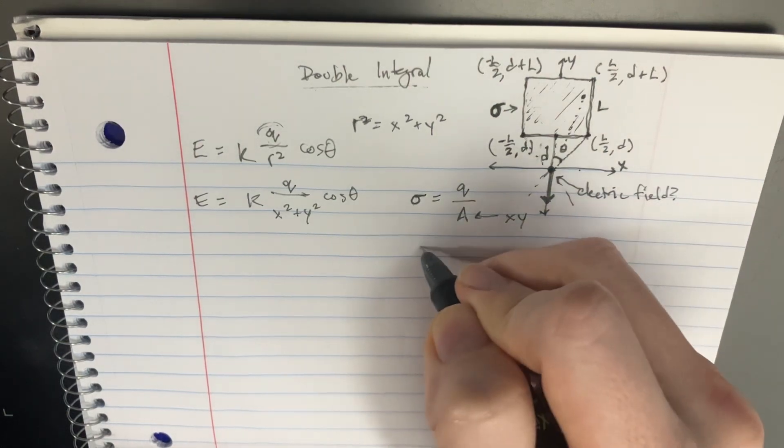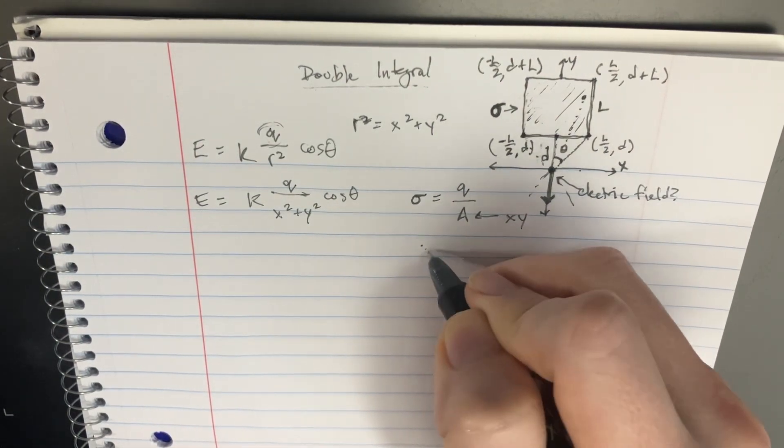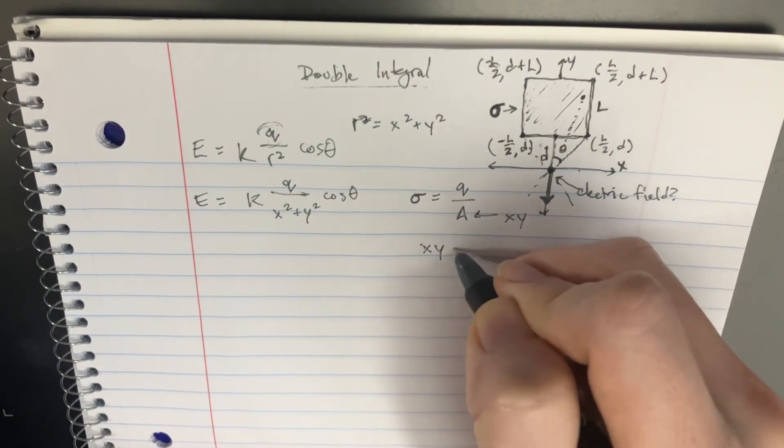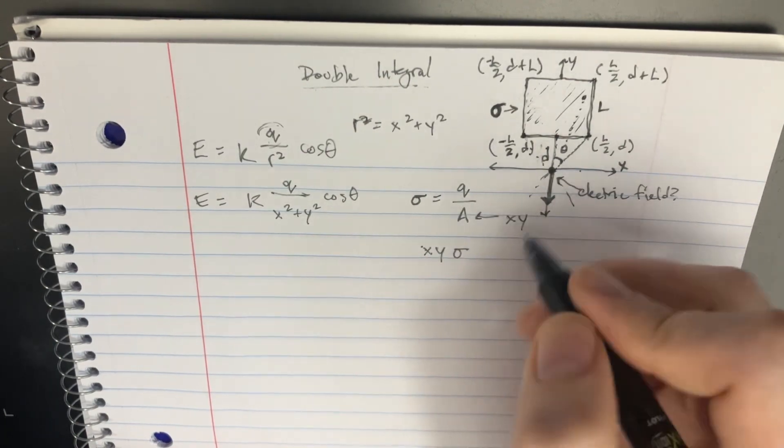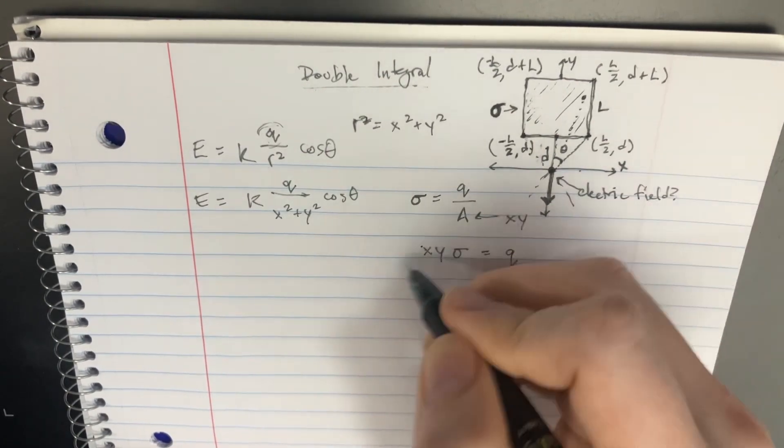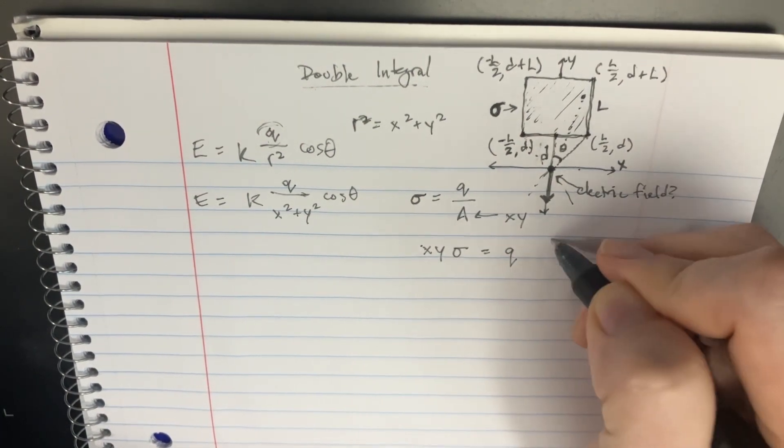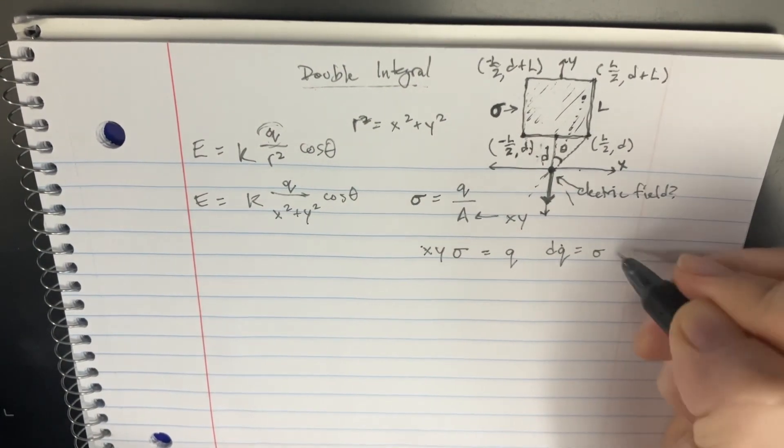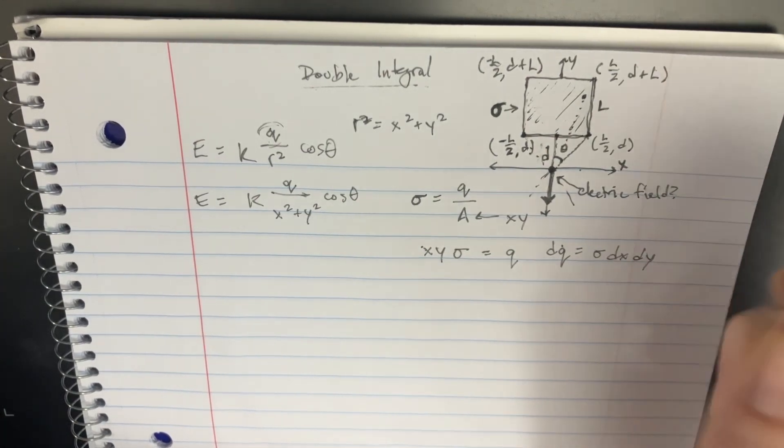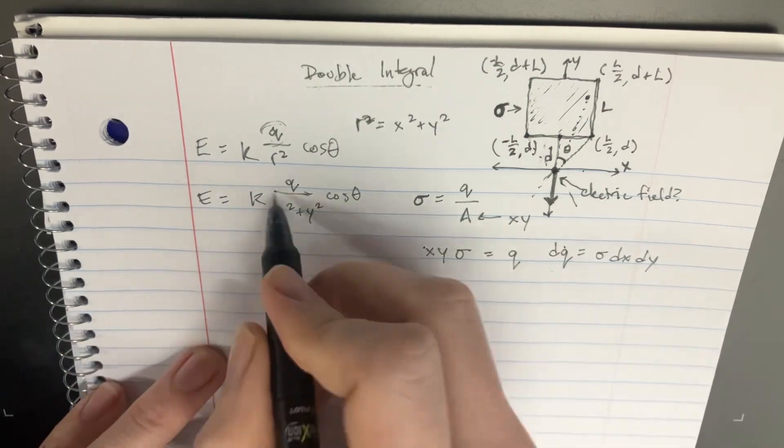And so now you'll find that the equation here sort of goes x, y with this thing here, and then equals q. And now you'll d everything on all sides, and you would get that dq is equal to this thing, density times dx dy.